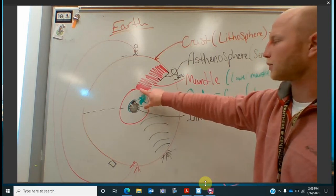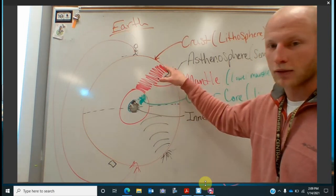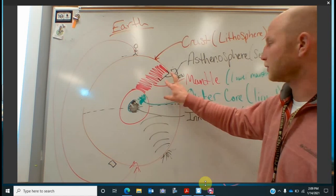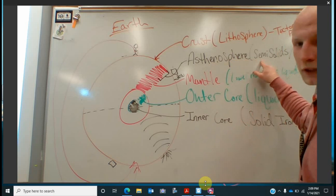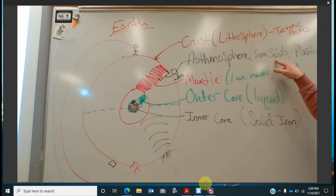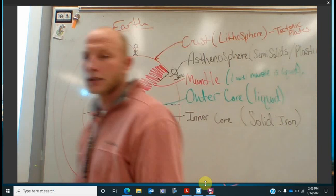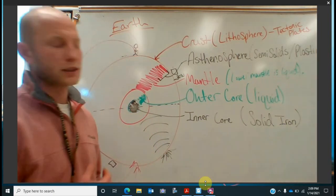And then we have our mantle. So this is our big red portion right here. Part of the mantle is our upper mantle, which we call the asthenosphere. Our asthenosphere, if you guys can see all the way over here, is a semi-solid. We call it a plastic layer.